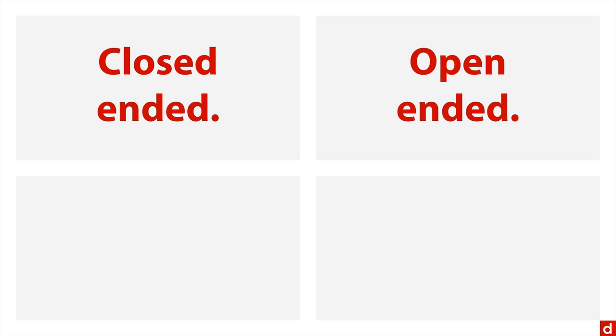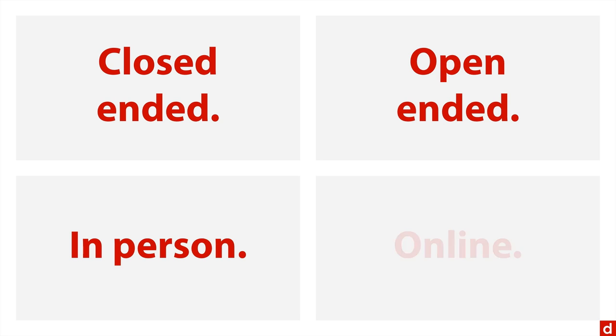Just as there were a few dimensions for interviews, there are a few dimensions for surveys. You can do what's called a closed-ended survey — that's also called a forced choice — where you give people just particular options, like a multiple choice. You can have an open-ended survey where you have the same questions for everybody, but you allow them to write in a free-form response. You can do surveys in person, or online, or over the mail or phone.